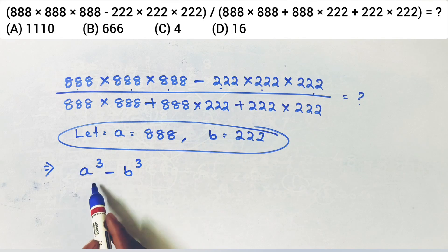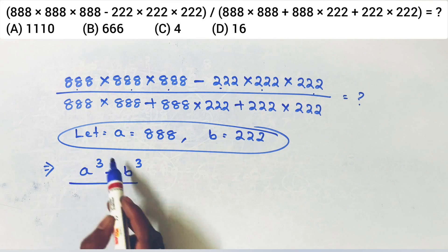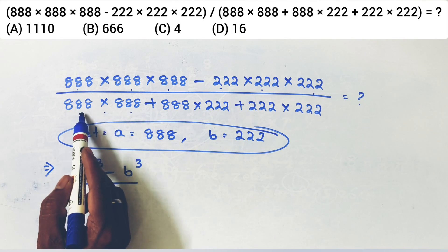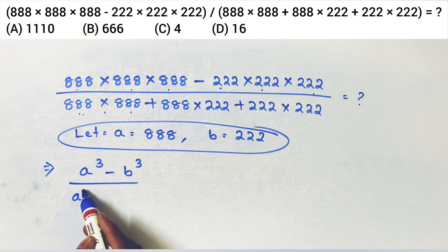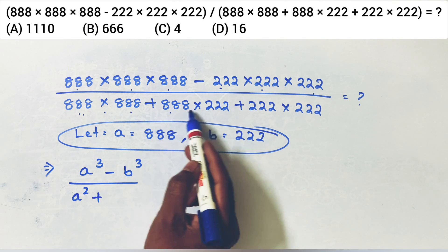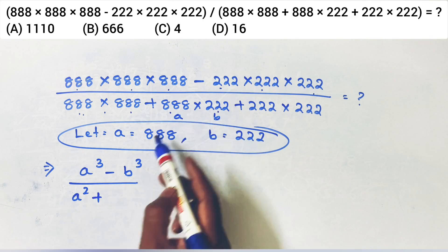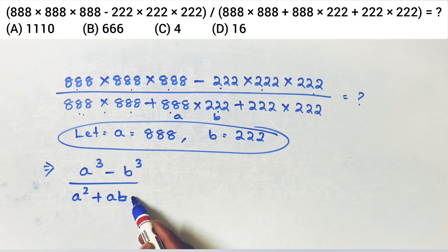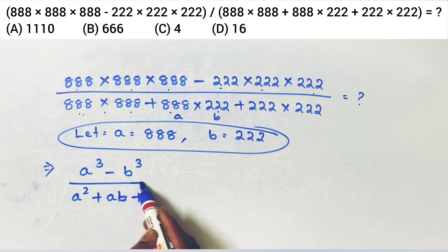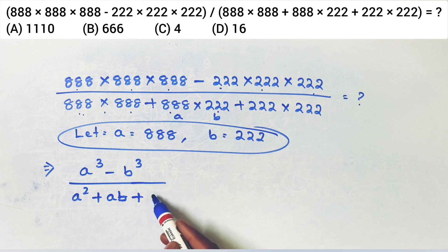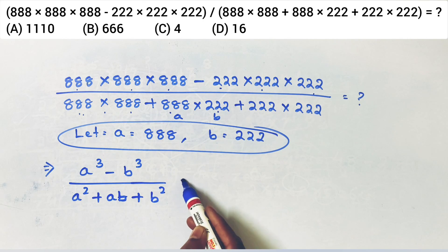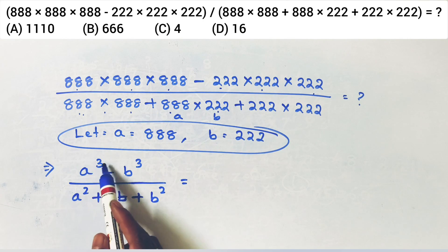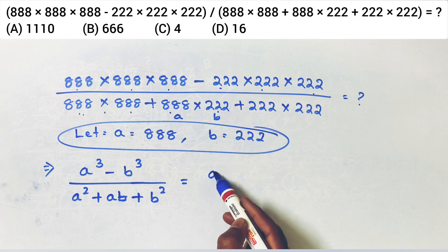Minus bq by... b square — okay, is equal to aq minus bq.